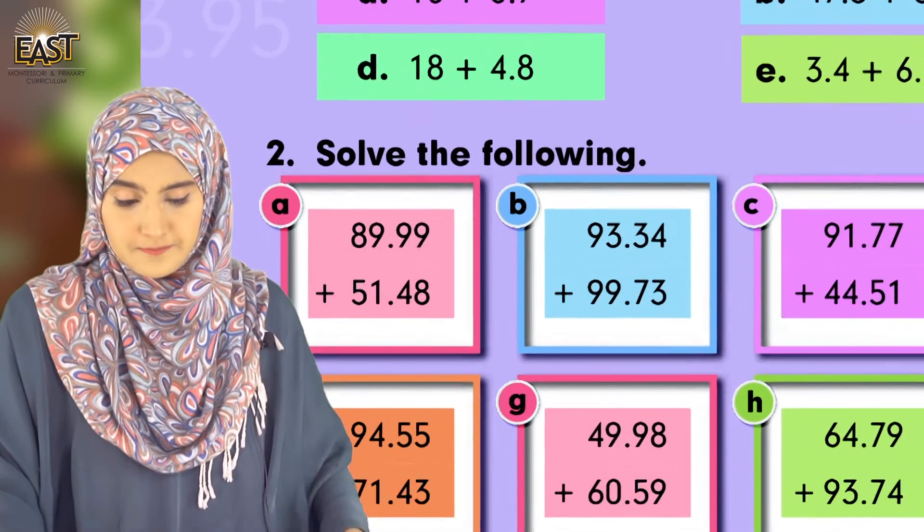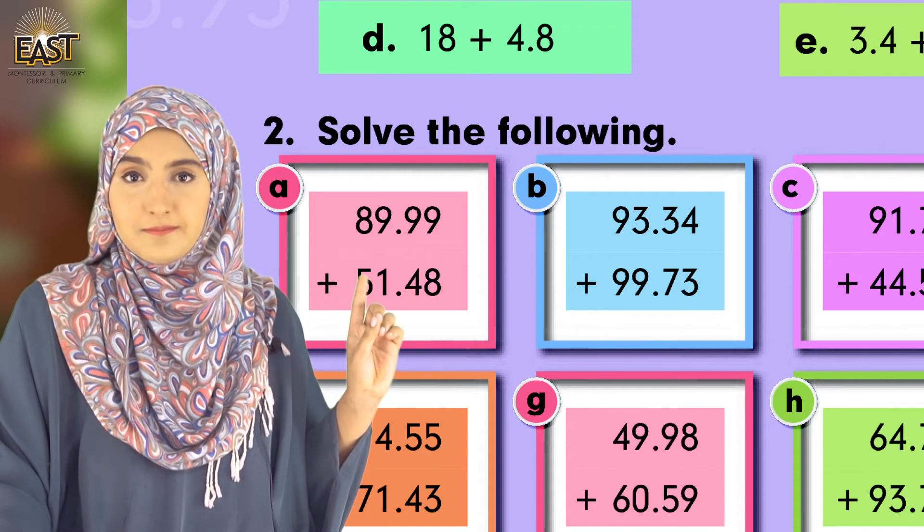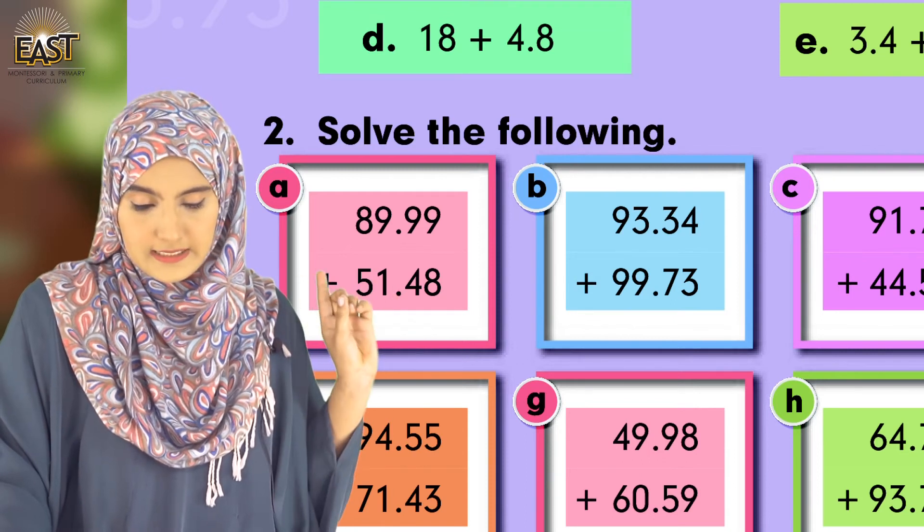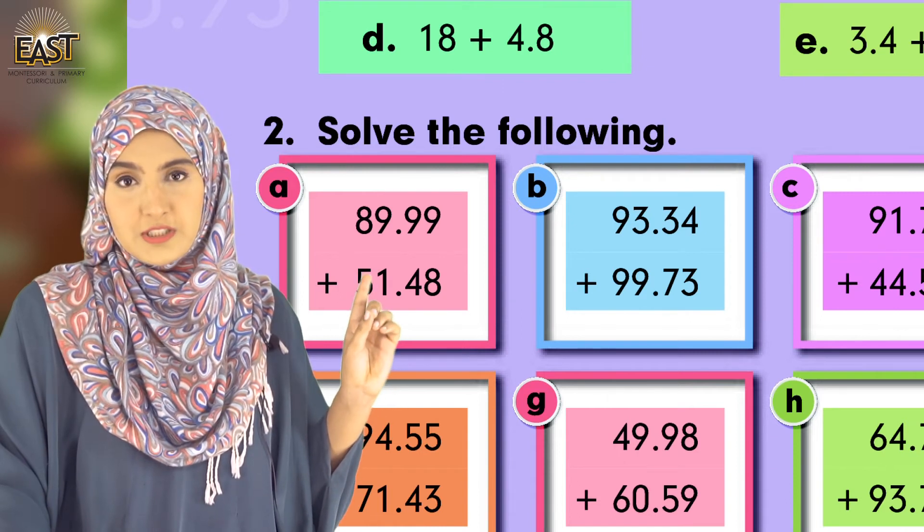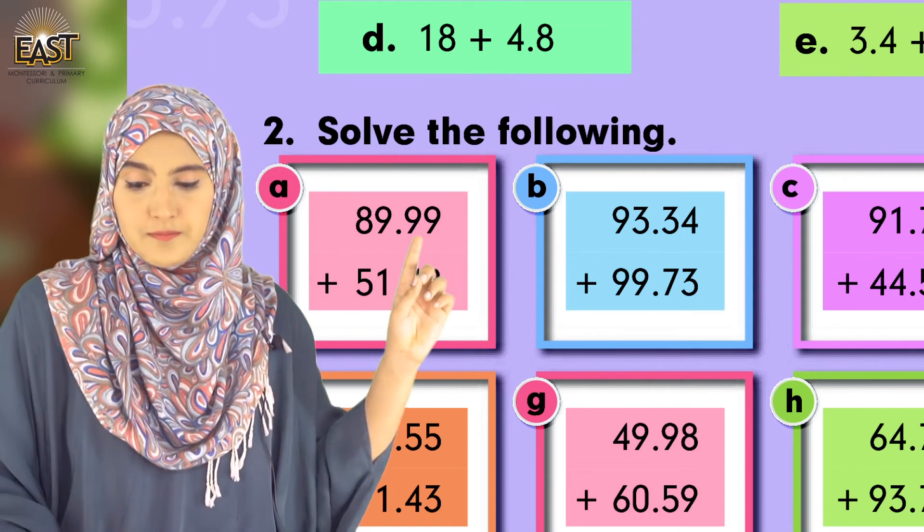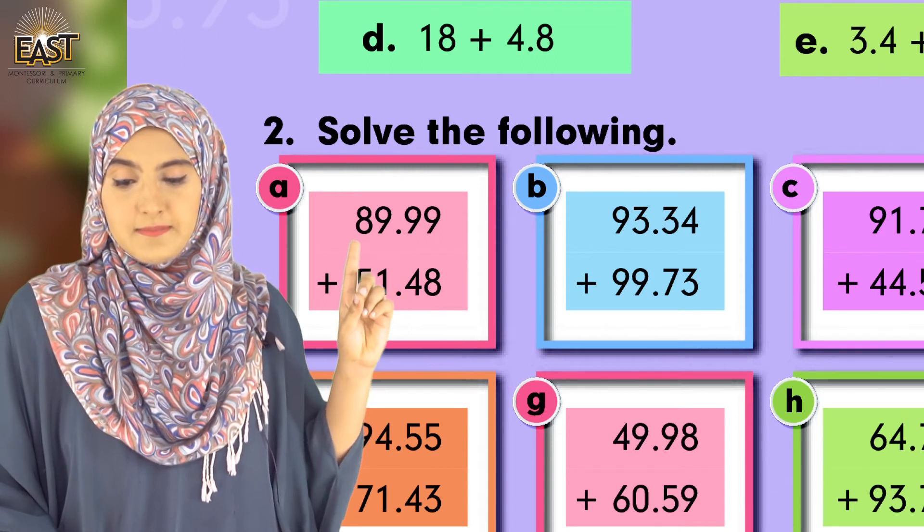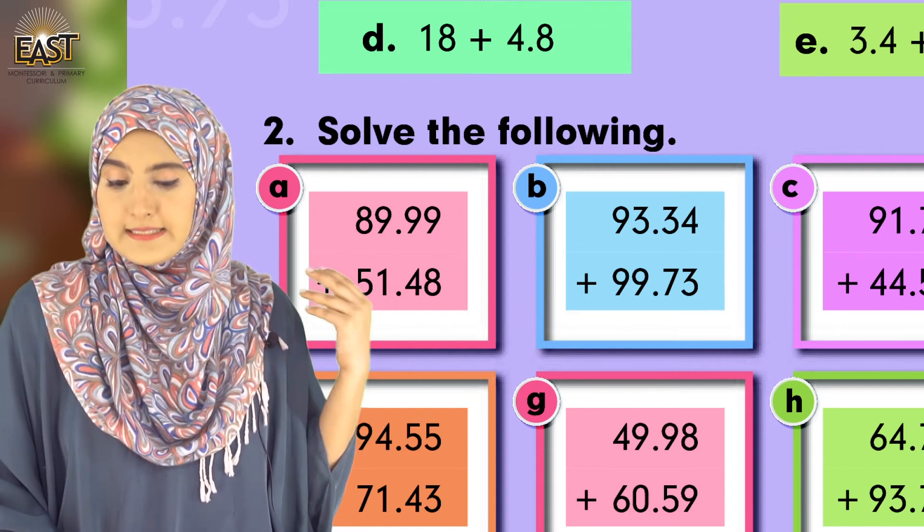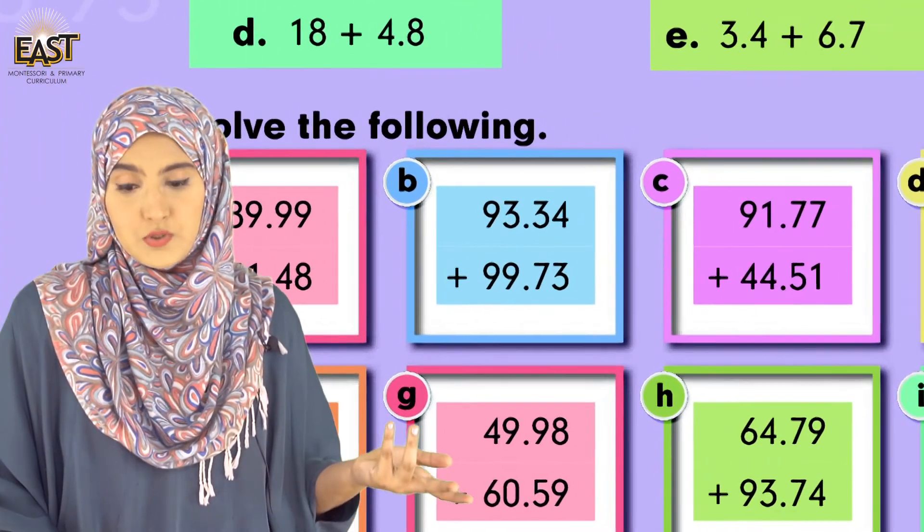89.99 plus 51.48. Add 89.99 and 51.48 and you will see the answer is 141.47. Which side will you start from? Right-hand side. You will start adding from here: 9 plus 8, 9 plus 4, point, 9 plus 1, 5 plus 8. Just like this you will see the answer is here.